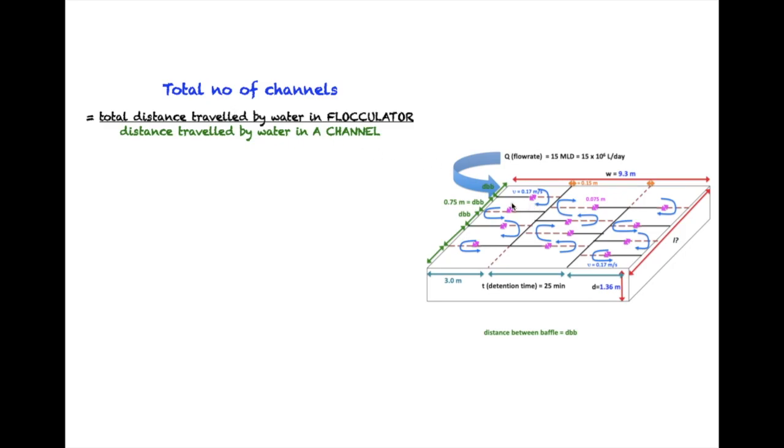We need to find out the total number of channels in this flocculation tank. How do we do that? By obtaining the total distance traveled by water in the flocculator - we have already calculated it before, it was 255 meters - divided by the distance traveled by water in a channel. This is something that we would like to find out.